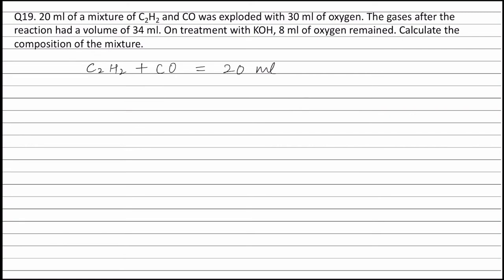Let the volume of carbon monoxide be X ml. Therefore, the volume of C2H2 will be equal to (20 - X) ml.